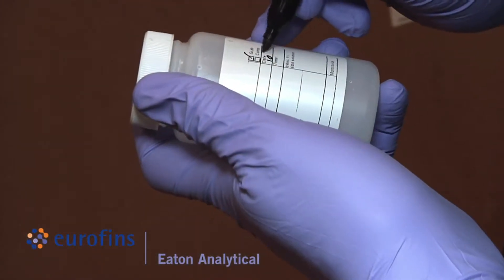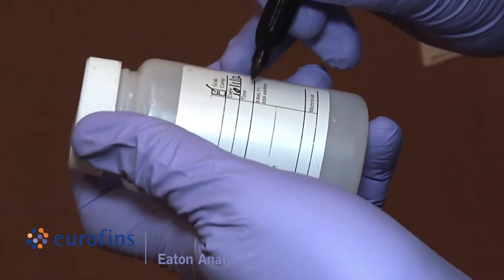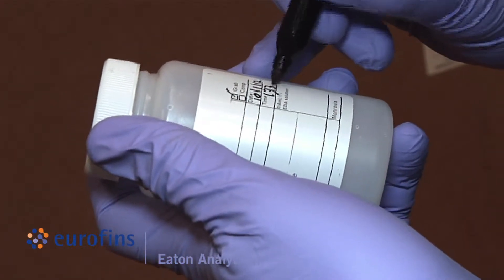Before filling, label bottles with required information that is not already pre-printed, such as the sample ID, date, and time of collection.